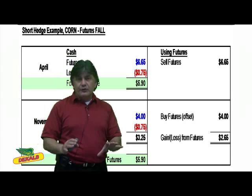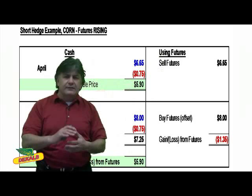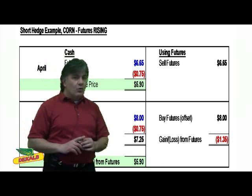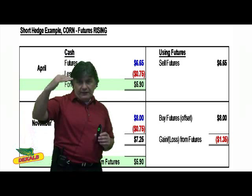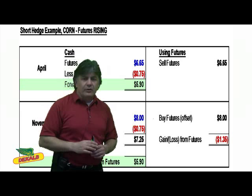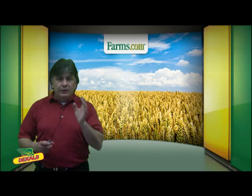Now let's assume futures are rising. You're still short at $6.65, basis stays the same, but futures go to $8. In November, you'd get $8 for your corn less your basis — so $7.25. But because you shorted futures and locked in at $6.65, you subtract the loss from that $7.25, and you still get $5.90.